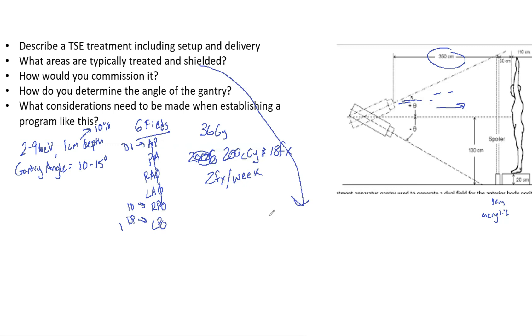shielded. You want a boost to the soles of the feet, the palms of the hands, the scalp, and the perineum. Think about it: if you want to treat all their skin, what parts of the body aren't going to be treated? Obviously the top of their scalp, the palms of their hands, the soles of the feet, and the perineum won't be. So you want to boost those with a block.